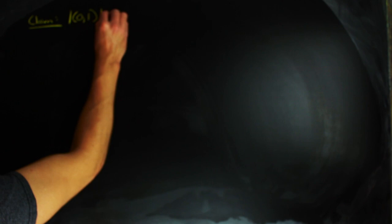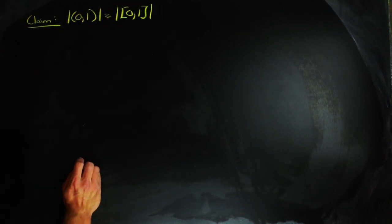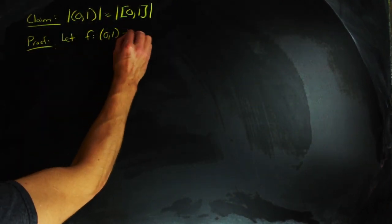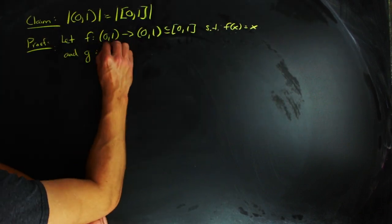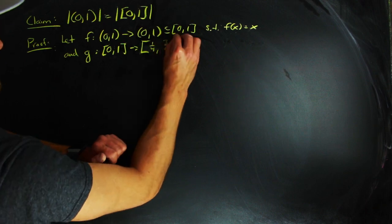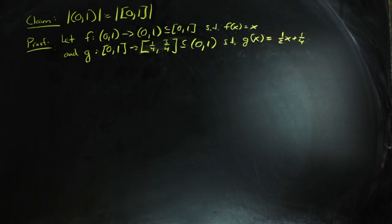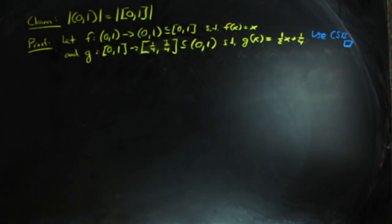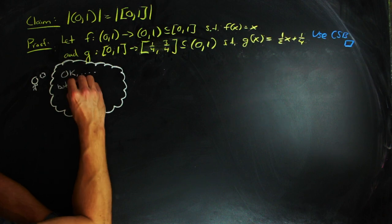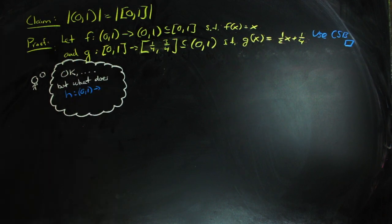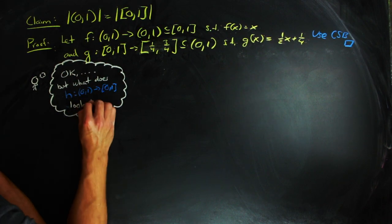We're going to return to our claim back at the beginning of the video that the cardinality of the open interval from 0 to 1 is equal to the cardinality of the closed interval from 0 to 1. So if we wanted to go ahead and just use the theorem, we could take functions F and G, which were defined in the following way. And so the two have the same cardinality by the Cantor-Schroeder-Bernstein theorem. But since the proof was constructive, we can actually construct the bijection and see what H looks like based on these two F and G.